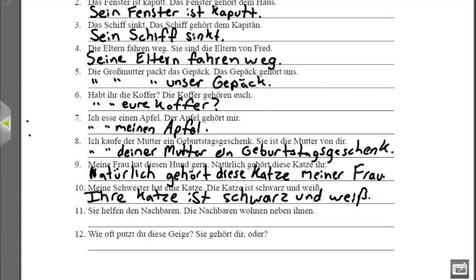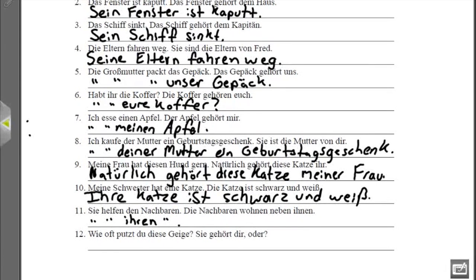Nummer elf: 'Sie helfen den Nachbarn' — they are helping the neighbors. 'Die Nachbarn wohnen neben ihnen' — the neighbors live next to them. This one is a little more complicated because it doesn't come right out and tell you the answer. We want to say they are helping their neighbors. 'Sie helfen ihren Nachbarn.' We use 'ihren' because it is plural and dative — dative because 'helfen' is a dative verb, and plural because Nachbarn is plural.